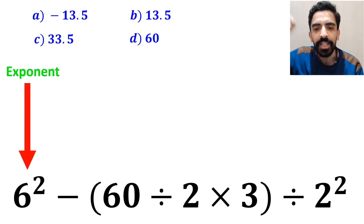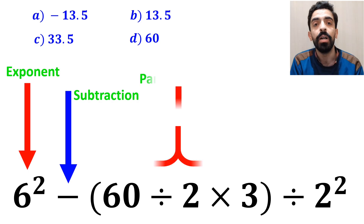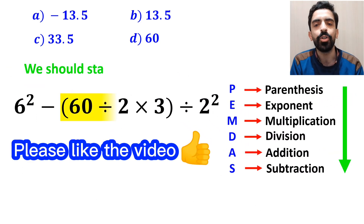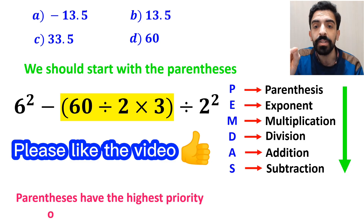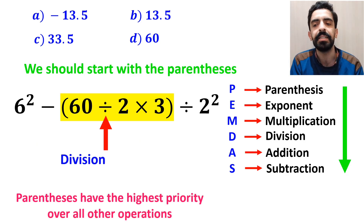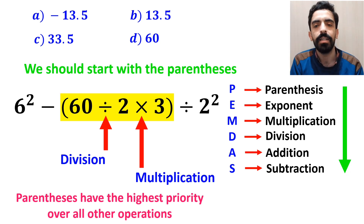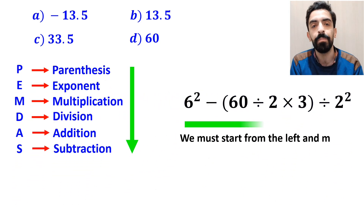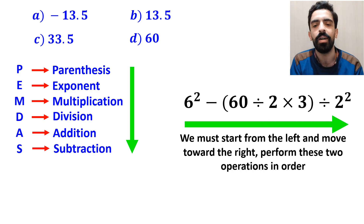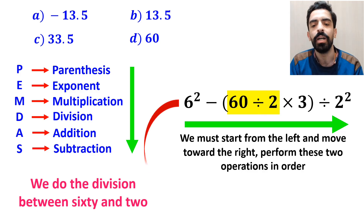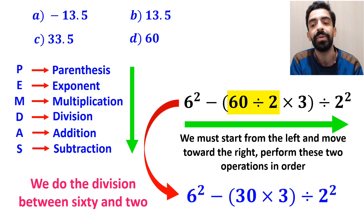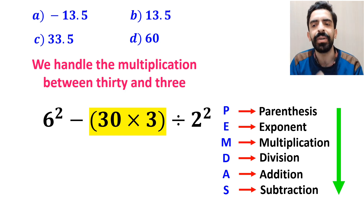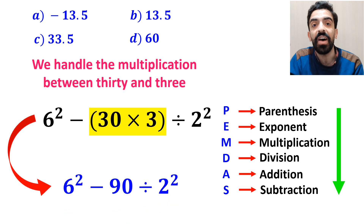As you can see in the image, this expression has first an exponent, then a subtraction sign, followed by parenthesis, then a division sign, and finally another exponent. According to the PANDAS rule, first we should solve the parenthesis, because parenthesis have the highest priority over all other operations. Inside the parenthesis, we have a division sign and then a multiplication sign. It's very important to note that multiplication and division have exactly the same level of priority. In this situation, we start from the left and move right. So first we do the division between 60 and 2, simplifying to 6 squared minus 30 times 3 inside the parenthesis, then divided by 2 squared. Next we handle the multiplication between 30 and 3, simplifying to 6 squared minus 90 divided by 2 squared.